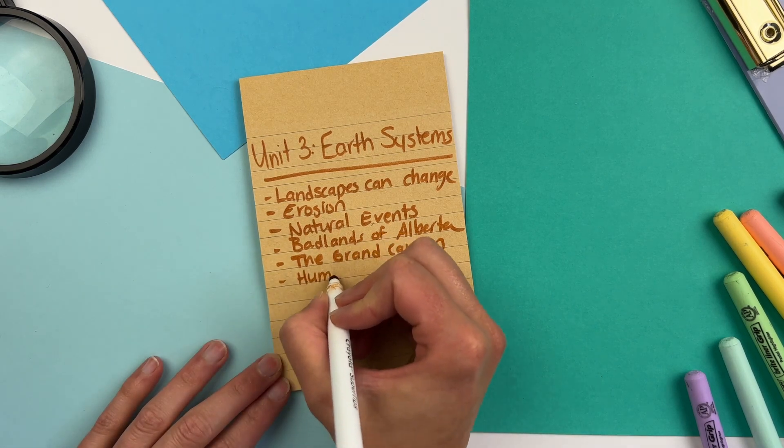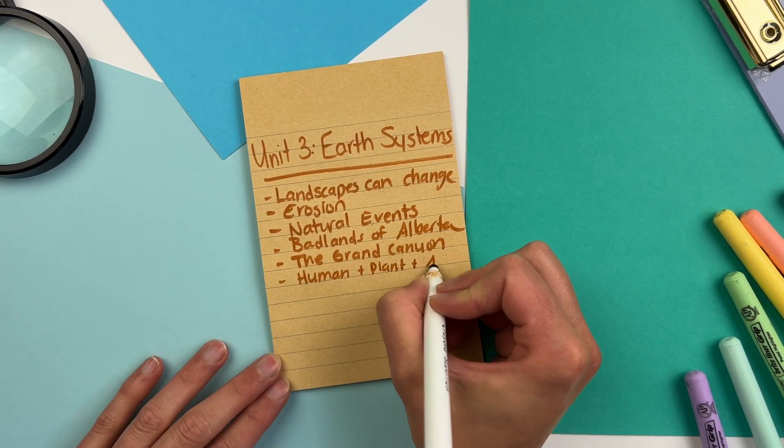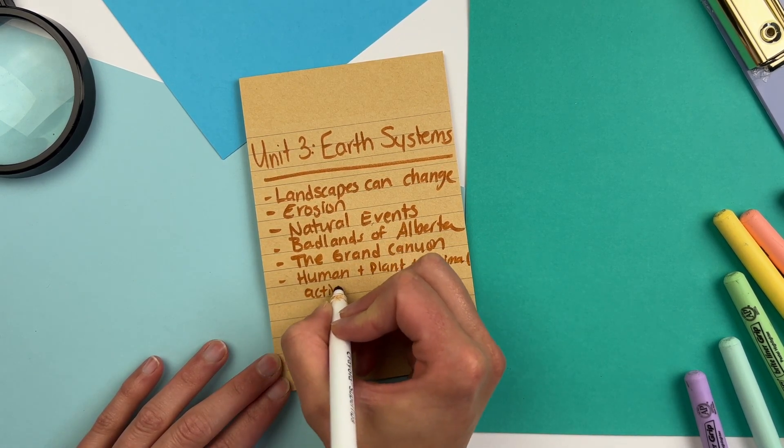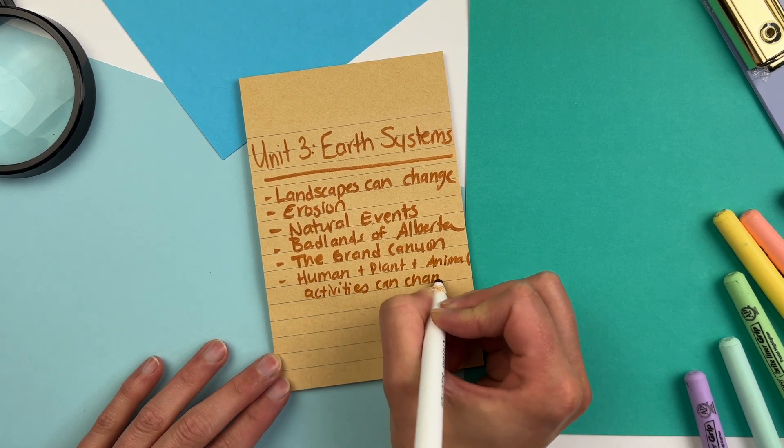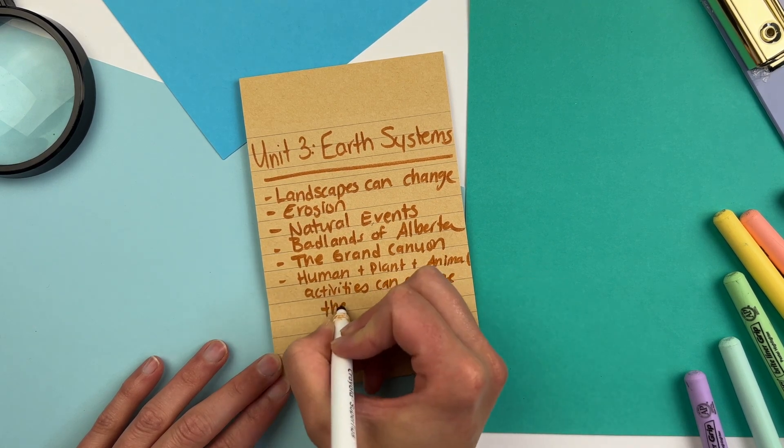The next part of unit three talks about how human activity can also change the shape of Earth's land — urbanization, farming, mining, and pollution. Plant and animal activities can change landscapes too: overpopulation of animals or parasites, and animals burrowing or plants spreading can all have an effect on Earth's landscape.